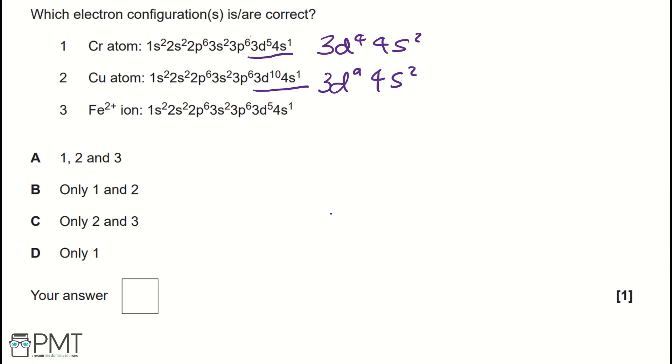However, a d orbital is a lot more stable fully filled or half filled with a half filled 4s subshell. It's a lot more stable to have the arrangement we've been given in the question as opposed to the arrangement you would expect on the periodic table. Therefore, 1 and 2 are correct.